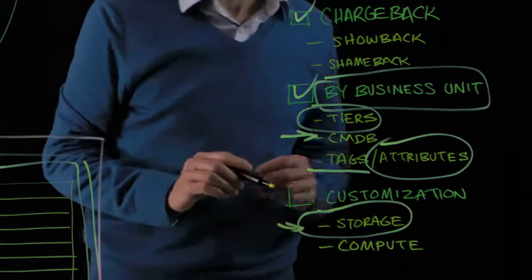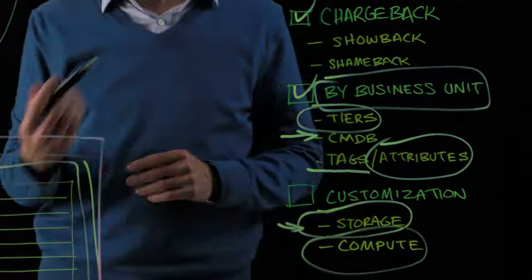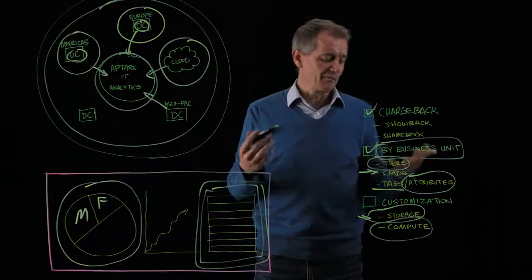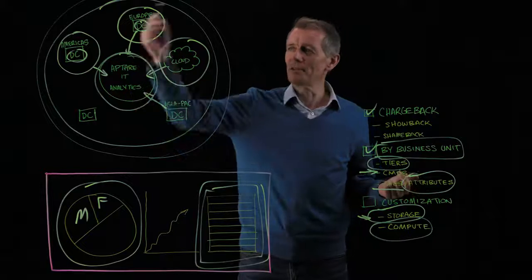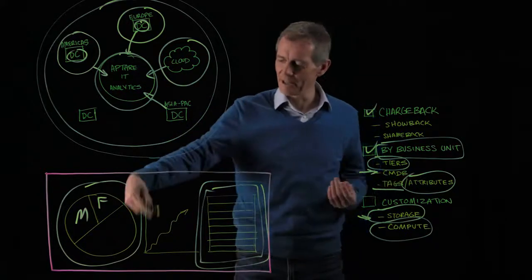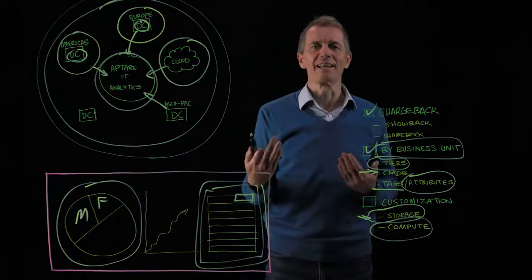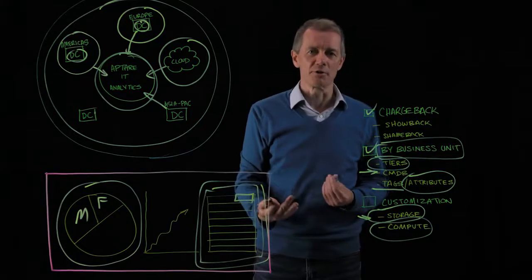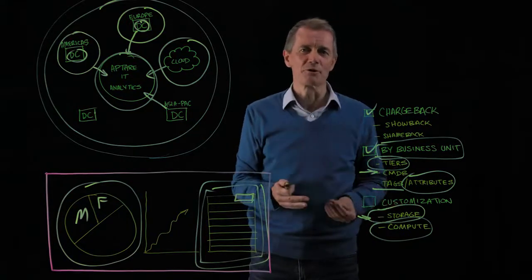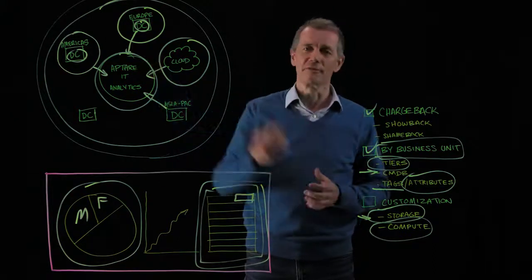We talked a little bit about storage as a resource, but we can also track and manage and report on and charge back on compute. And any of the 30,000 data points that we're collecting can ostensibly be used to either aggregate the reporting or be included as part of the line item of the reports to show that detailed breakdown to your consumers of the cost of what they're utilizing, to let them be part of the solution and partner with IT to help lower the costs of managing the infrastructure.